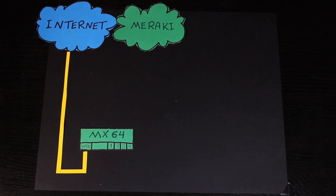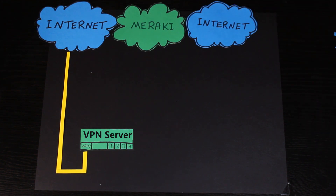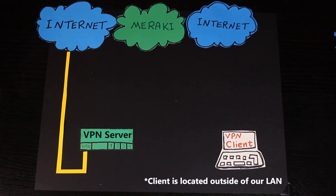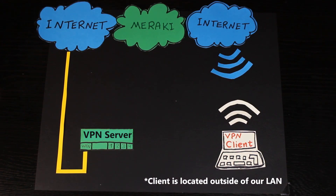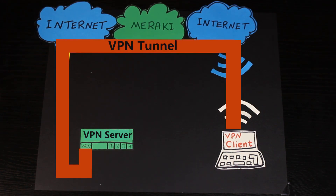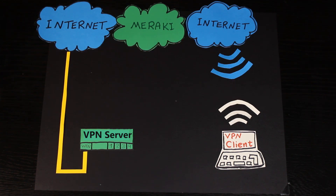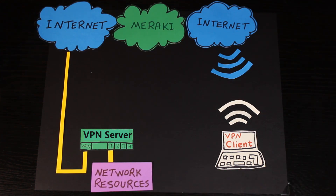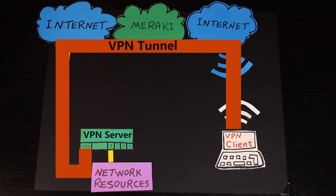Basically, in this setup, the MX is going to be the VPN server, and the clients — which are end devices such as computers, tablets, and phones — can connect to the server to establish a VPN connection. The main benefit of using client VPN is being able to remotely connect to your network and access your local network resources. However, since the VPN connection is private and secure, another benefit is adding an extra layer of security to your internet connection.